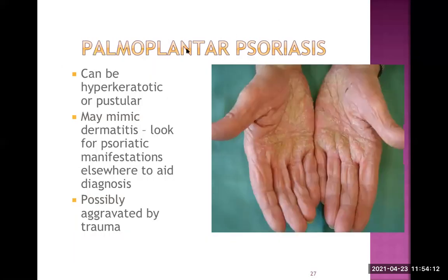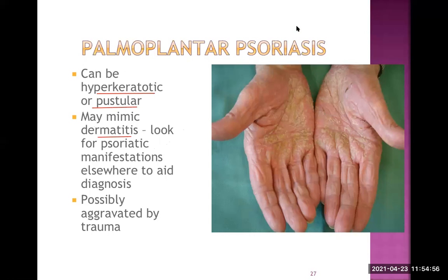Another variety is the palmoplantar form of psoriasis, where the palms and soles are affected. It still has the classical plaque or scale appearance and can be hyperkeratotic or pustular. It may mimic dermatitis. Usually it is associated with some other manifestation of psoriasis — like nail involvement or joint involvement of the hand — and combining all these pieces together confirms a case of psoriasis. In dermatitis, the joints are not affected.